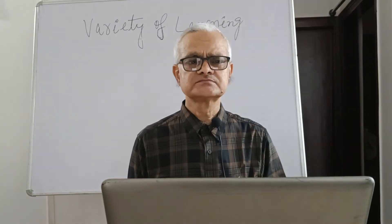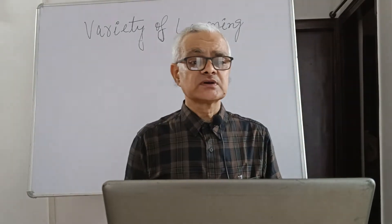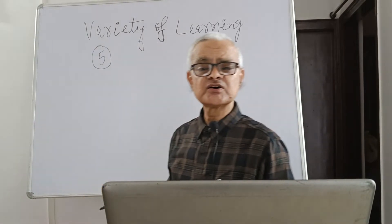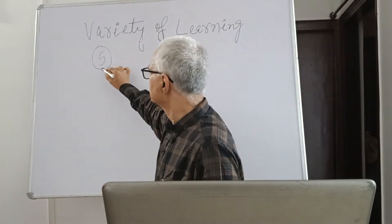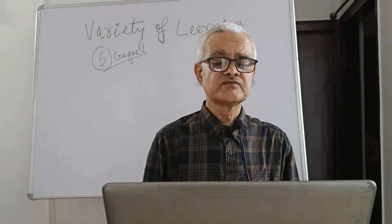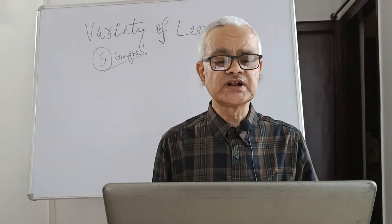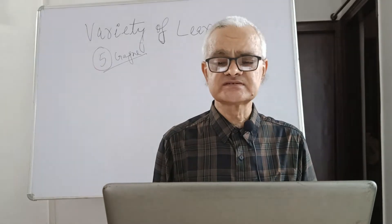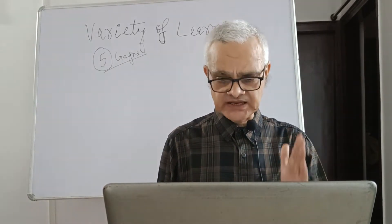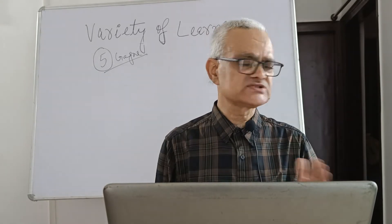In this part of the lecture, we shall be discussing the variety of learning. There are five varieties or categories of learning given by Gagne. The first one is verbal information skills — facts and body of knowledge or information. To know the information and different body of knowledge is the first category or variety.